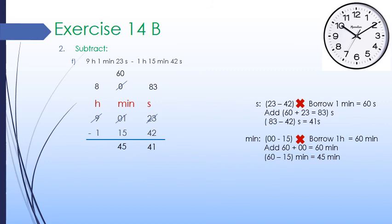In the hour column, we subtract 1 hour from 8 hours, which equals 7 hours. So our final answer is 7 hours, 45 minutes, 41 seconds.